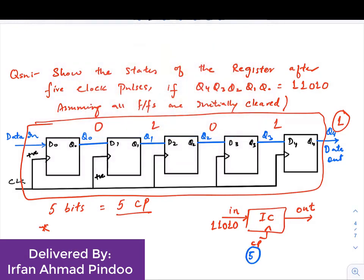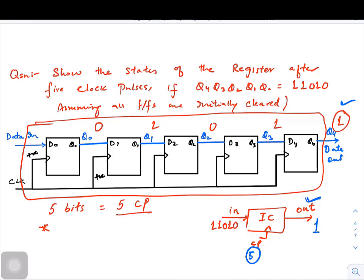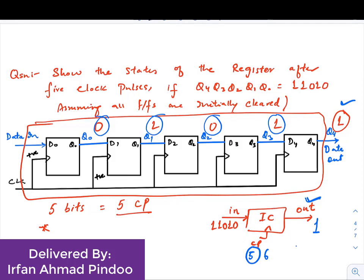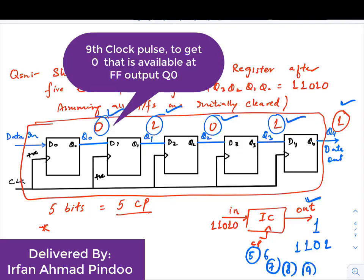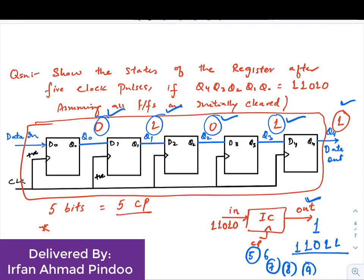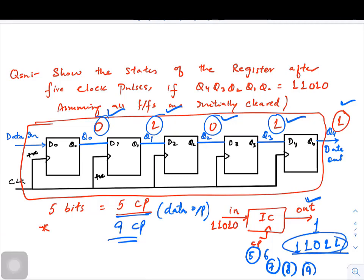My question to you is: if you have given five clock pulses, what is the data available at the output? As you can see in the diagram, the only bit coming out till now is only one. The other bits are still inside the flip-flops — they are not outside. So you will need a sixth clock pulse to get the next one, a seventh clock pulse to get the third bit, an eighth clock pulse to get the next one, and a ninth clock pulse to get the last one. That is basically the disadvantage in SISO — even after five clock pulses you are not getting the data at the output.